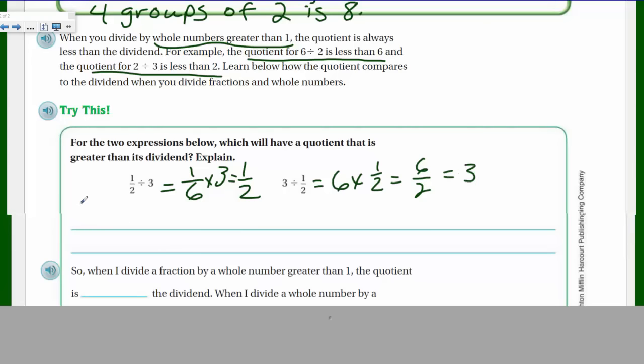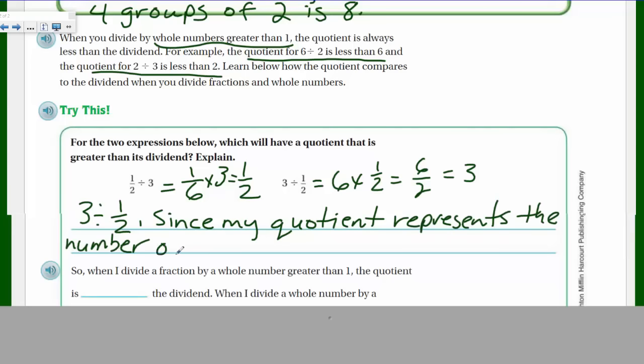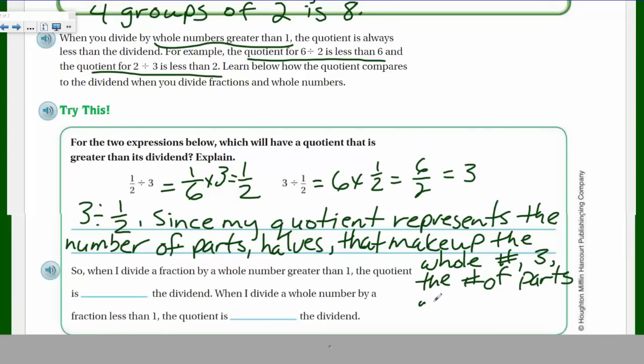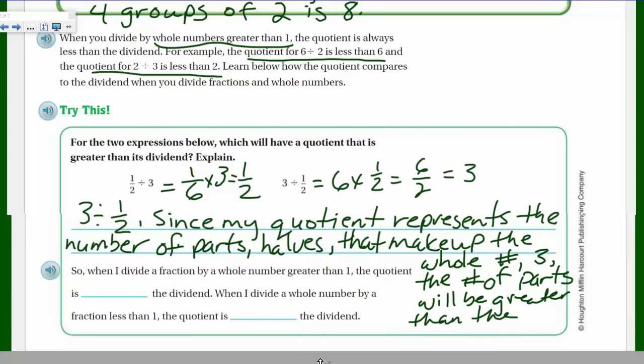So my answer would be three divided by one half. Since my quotient represents the number of parts, in this case it was halves that make up the actual whole number. I'm just going to use that as abbreviation, which was three. That was our whole. The number of parts will be greater than the dividend or whole number.